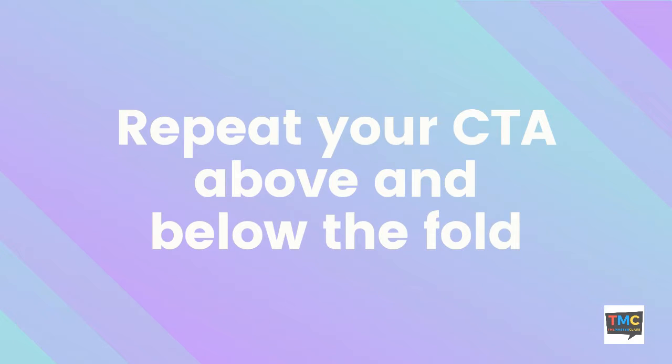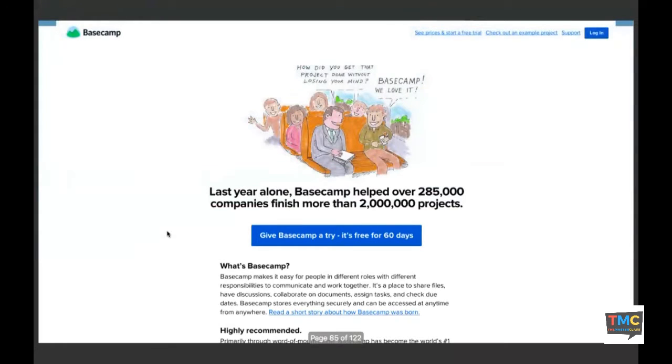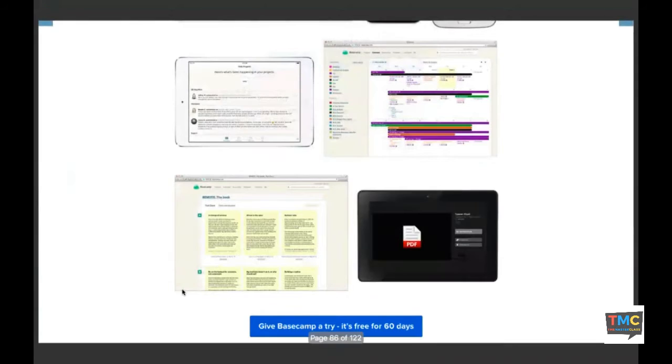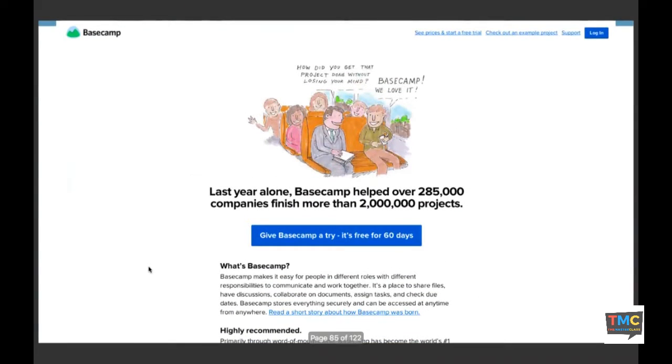Now it says repeat your CTA above and below the fold. Why is that? Because that's what you want and what you're highlighting. In this case, you have a CTA here. When I go a little down and I'm reading, people aren't going to come back and say where is the CTA.